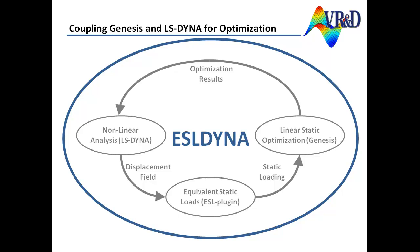All the different types of design optimization techniques in Genesis are available in the engineer's arsenal to design the crash structure using ESL Dyna. LS-Dyna is a product of the Livermore Software Technology Corporation, while Genesis, Design Studio, and ESL Dyna are products of Vanderplaats Research and Development, Inc.